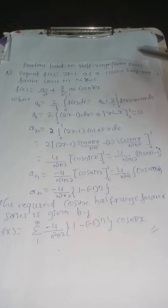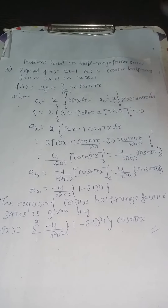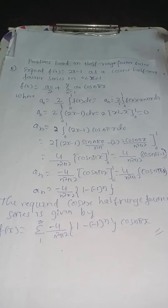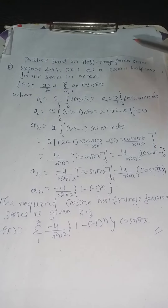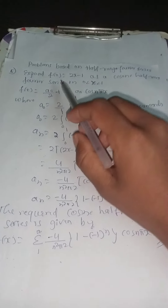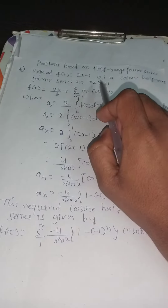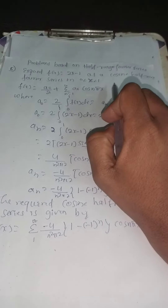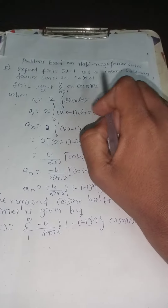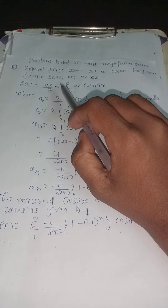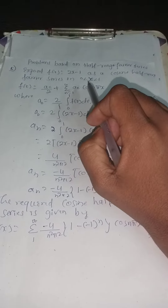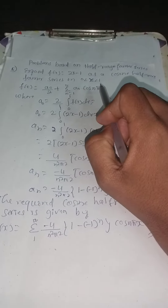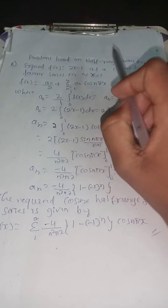Problems based on half-range Fourier series. The given problem is: expand f(x) = 2x - 1 as a cosine half-range Fourier series on 0 less than x less than 1.